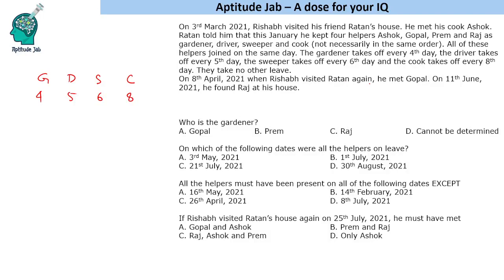On 8th April, when Reshap visited Ratan again, he met Gopal. On 11th June, he found Raj at his house. This is basically a problem based on LCM. On the first visit he met Ashok, so Ashok is the cook. Now, Ashok takes leave on the eighth day, and all of them joined on the same day. If the other three were on leave, we need the LCM of 4, 5, and 6.